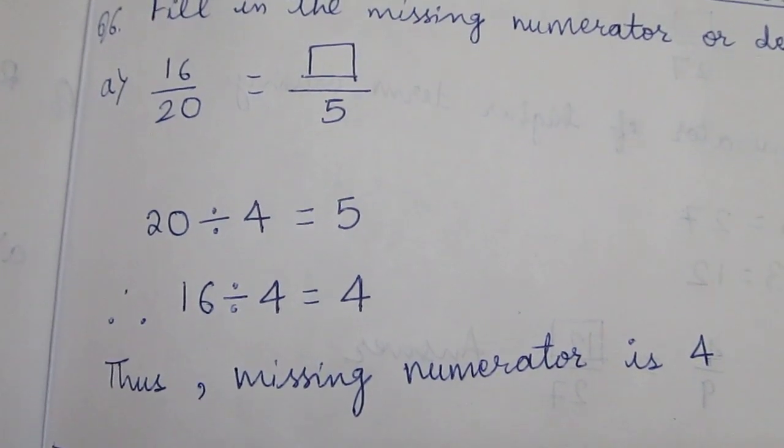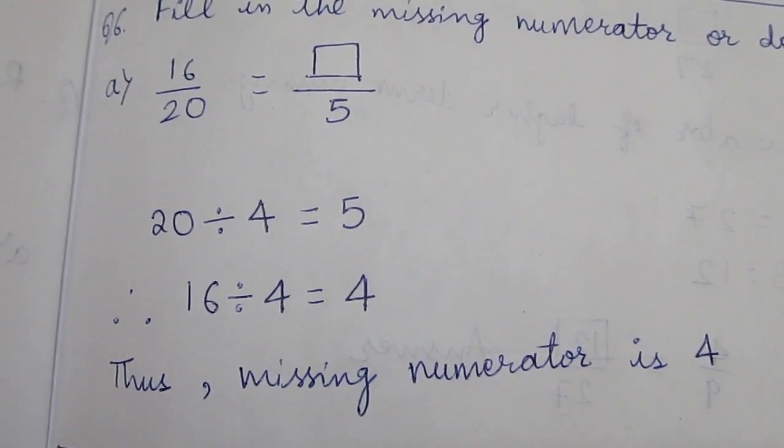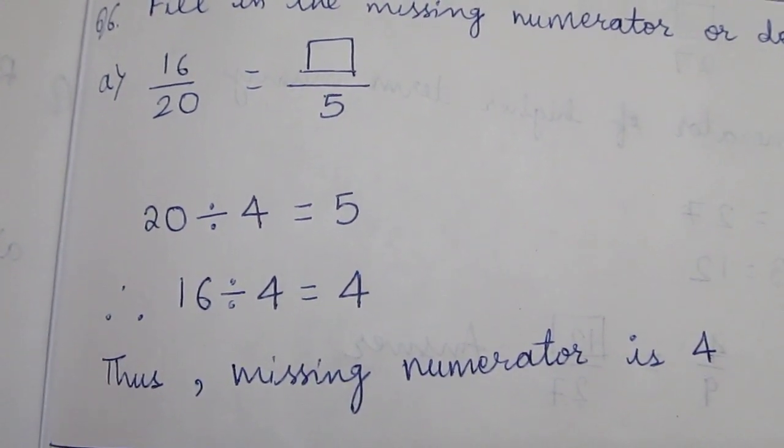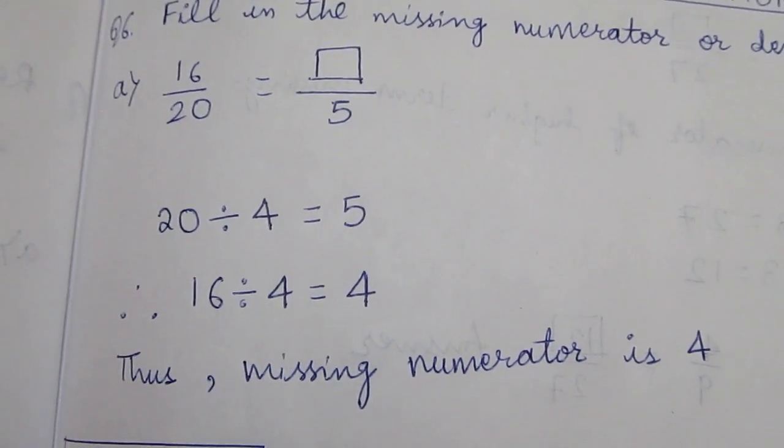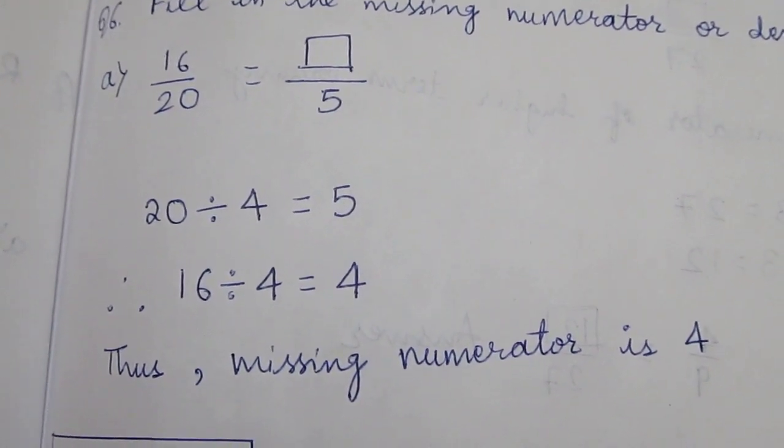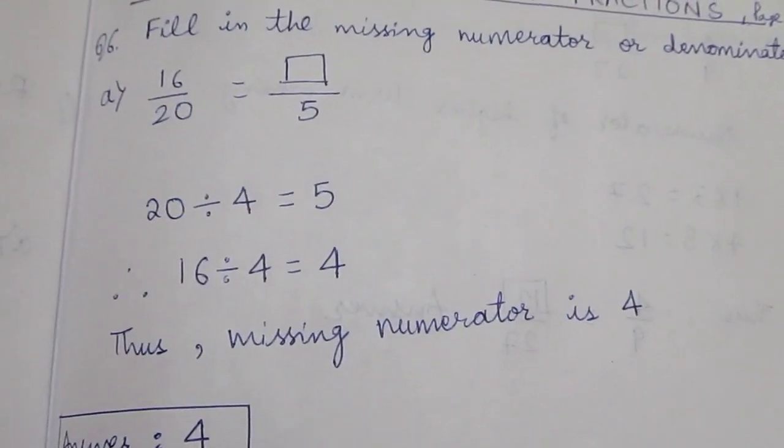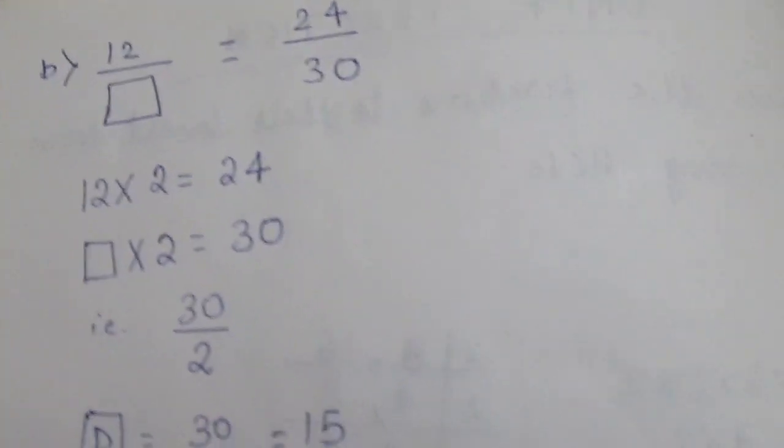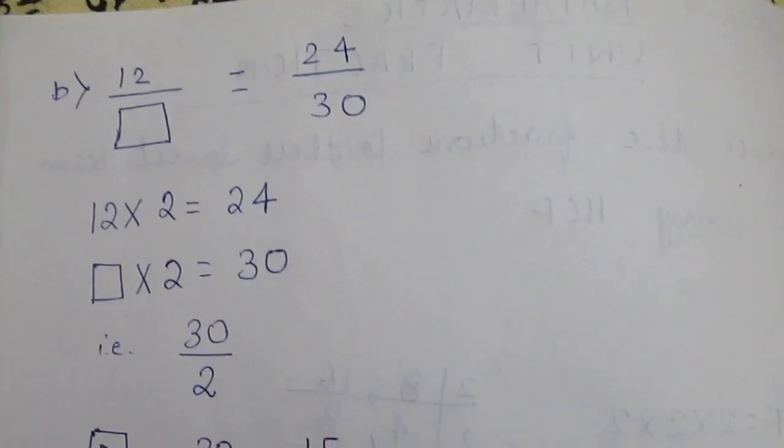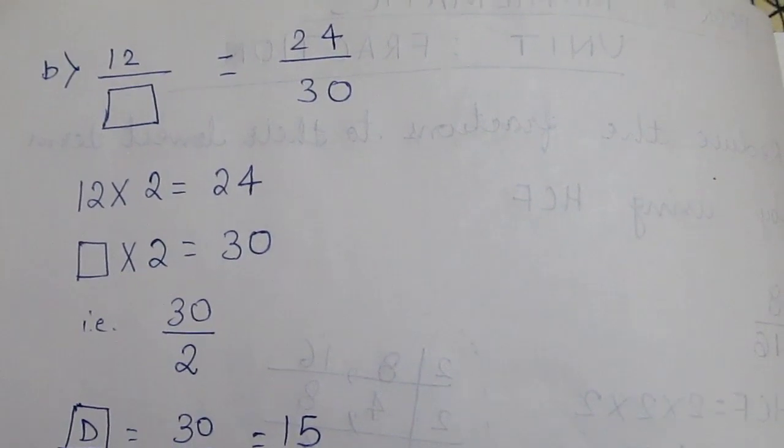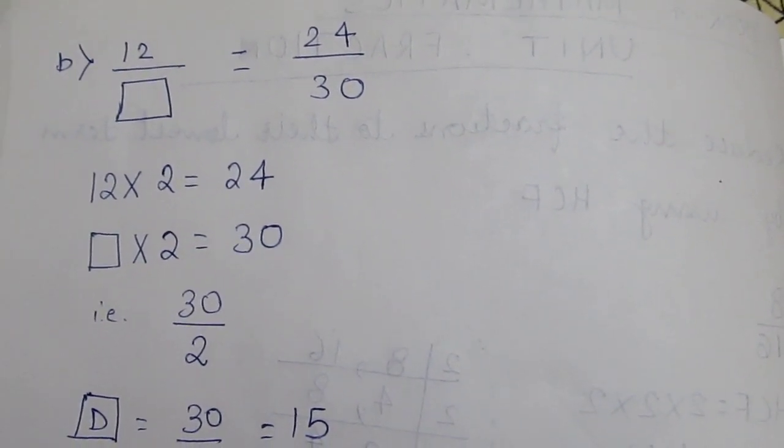Similarly, 16 divided by 4 gives 4. Therefore the missing numerator is 4. Next question is: 12/? = 24/30.